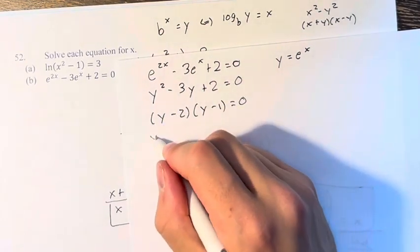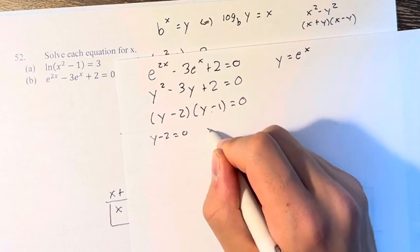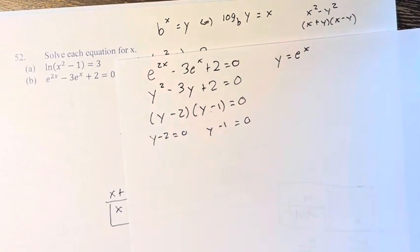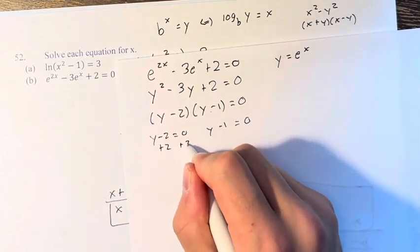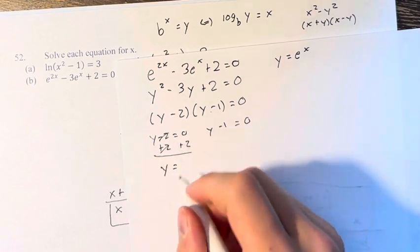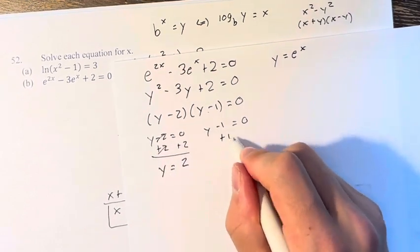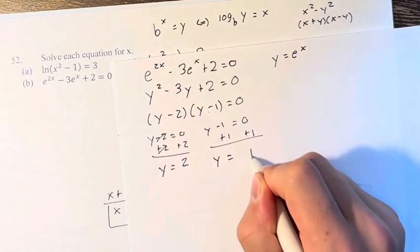And like before, either this has to be 0 or this has to be 0 for their product to be equal to 0. Therefore, solving these equations, y equals 2 or y equals 1.